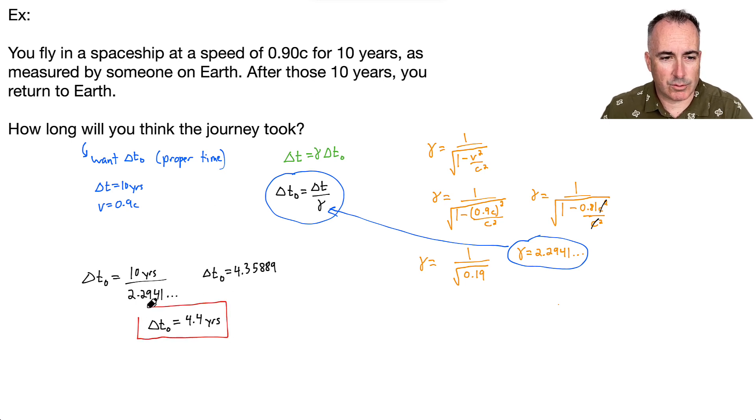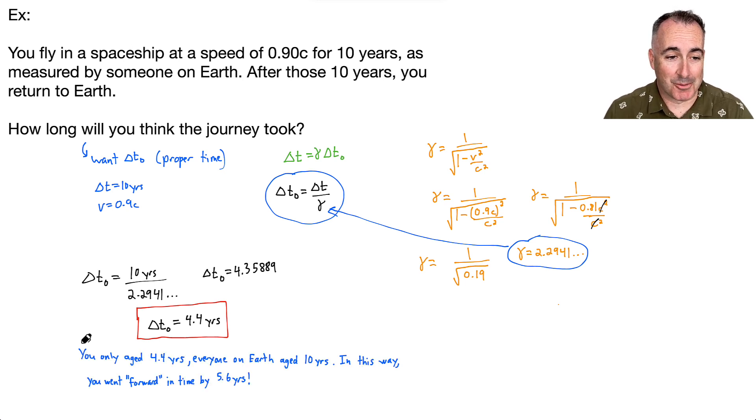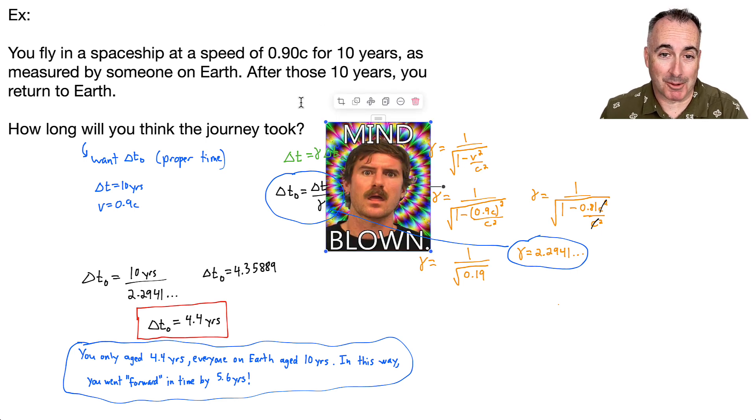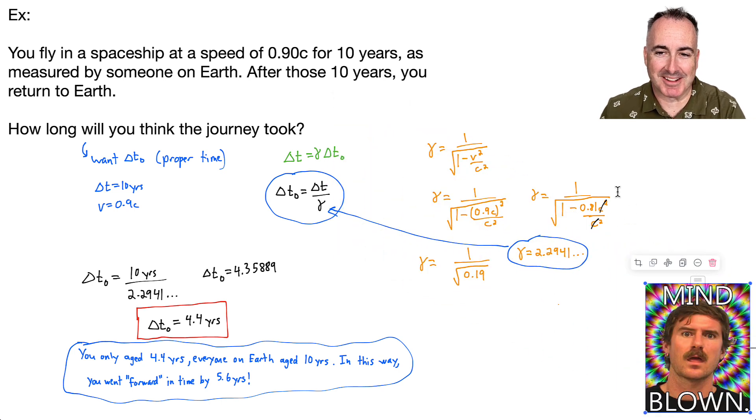So what does this mean? This means that you will have only measured 4.4 years elapsing. Remember, everybody else went ahead and aged 10 years. So quite literally, you have gone forward in time, right? Because everybody else aged 10 years, you've gone forward in time by, let's say, 5.6 years. You've time traveled 5.6 years compared to everybody else. Come on, how cool is that? So that's really what happened. In that sense, you've gone forward in time. You've traveled forward by 5.6 years compared to everybody else. That makes me so excited. Mind blown. That's how I felt when I first learned about this stuff. I was just like, what? And this is really how it works. Isn't that cool?